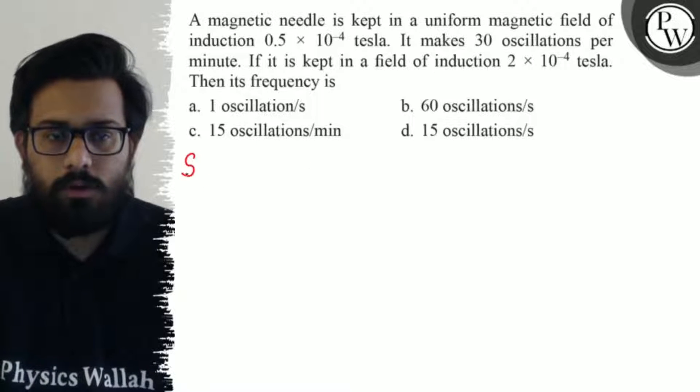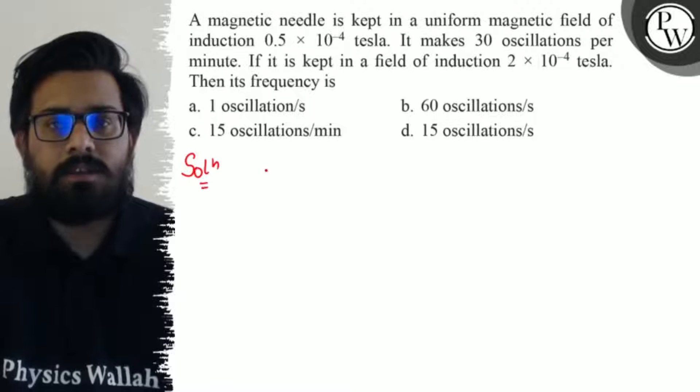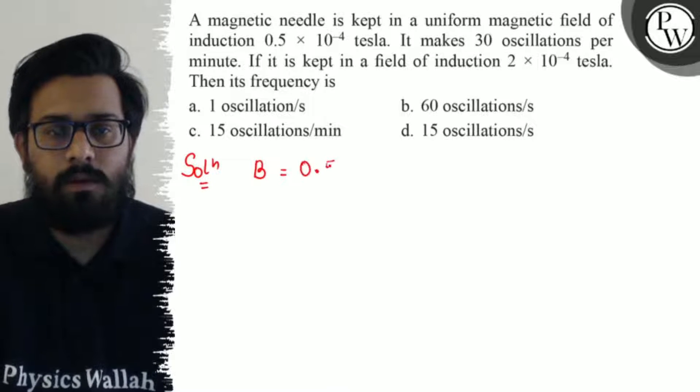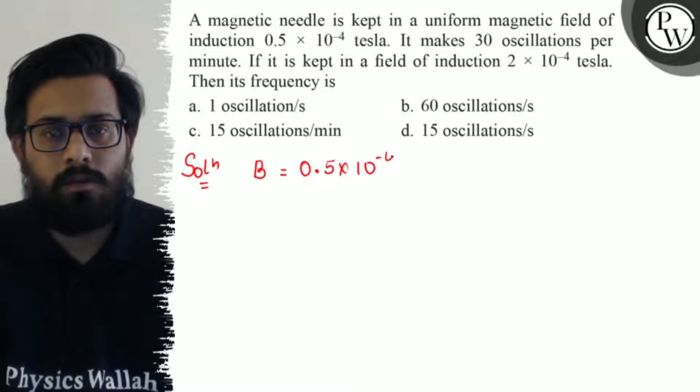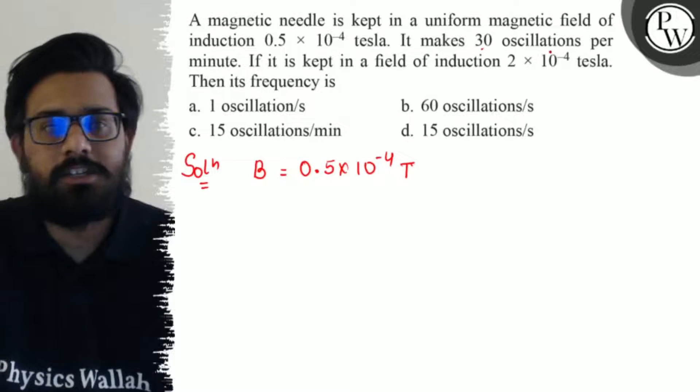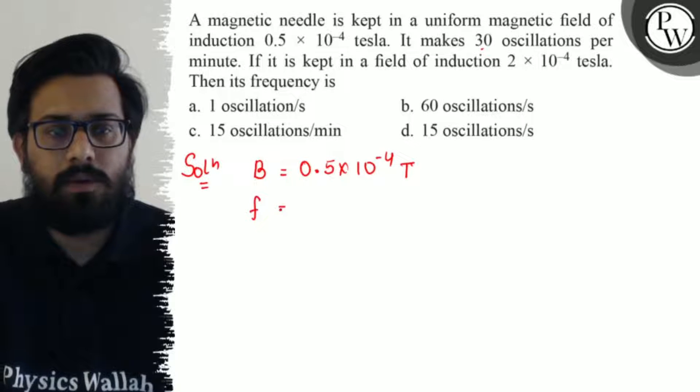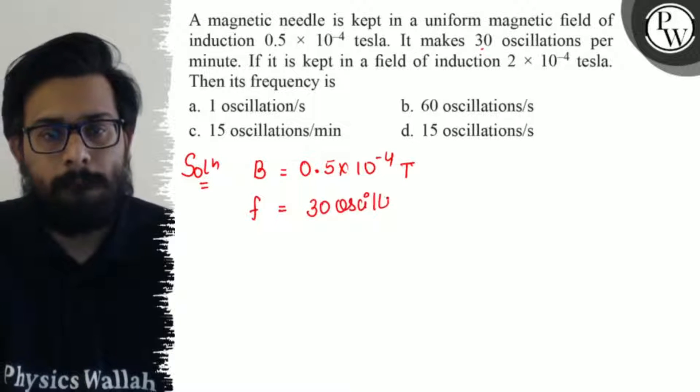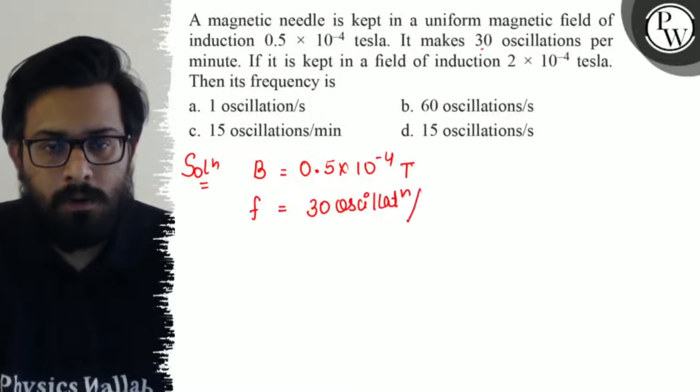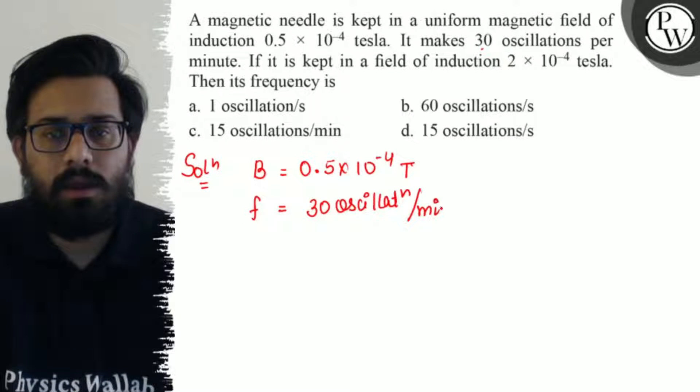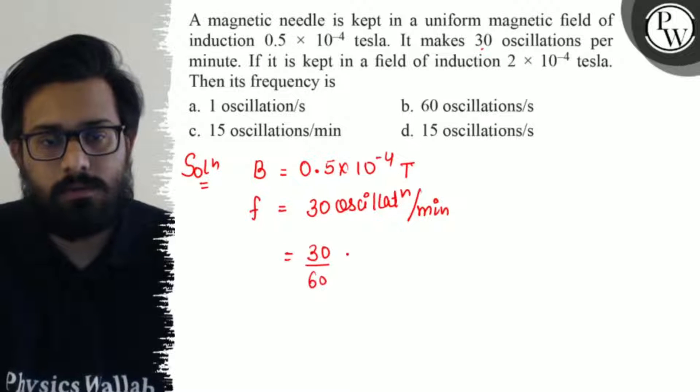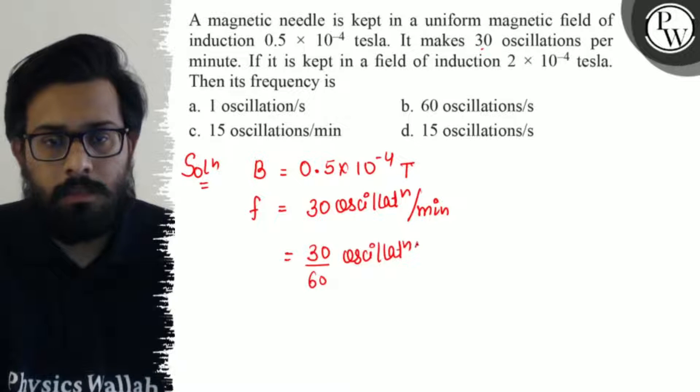So here in this question, what are the given data we have? First, the magnetic field given is B = 0.5 × 10⁻⁴ tesla. And it makes 30 oscillations per minute. So the initial frequency given is 30 oscillations per minute. Now we can convert this to seconds by dividing by 60, so it comes out to 0.5 oscillations per second.